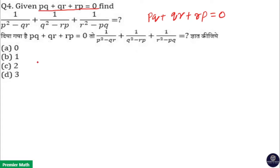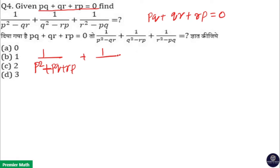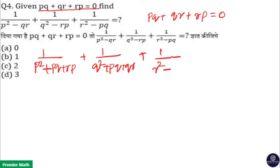So the first term becomes 1/(p² + pq + rp). The second term is 1/(q² + pq + qr), since minus rp equals pq + qr. The third term is 1/(r² + qr + rp), since minus pq equals qr + rp.